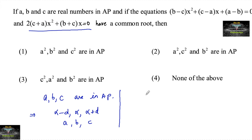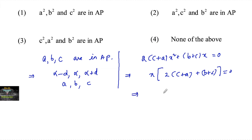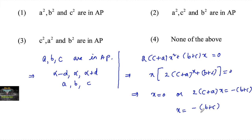If we consider the second equation, 2(c plus a)x² + (b plus c)x = 0, taking x common gives x times [2(c plus a)x + (b plus c)] = 0. This implies either x = 0 or x = −(b plus c) divided by 2(c plus a).